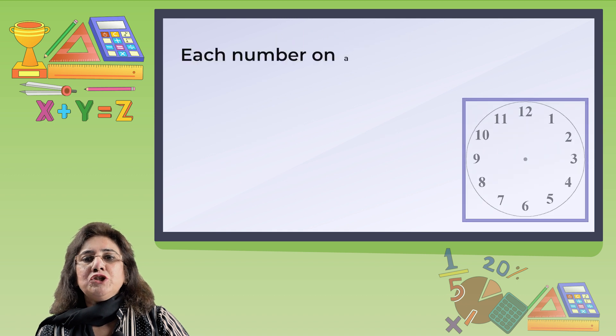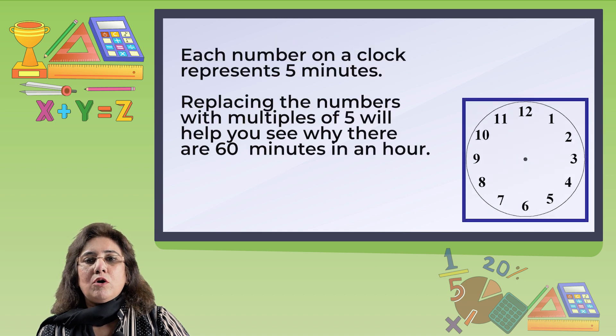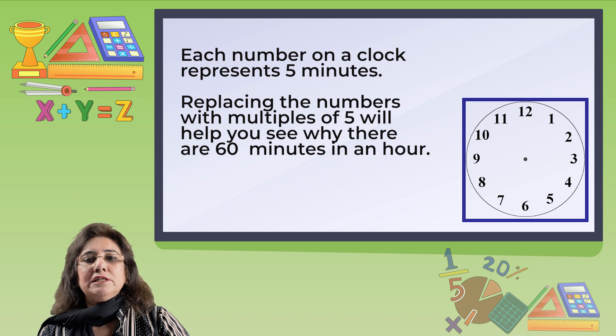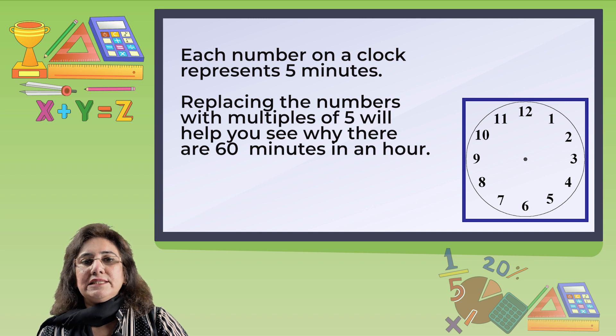Each number on a clock represents five minutes. Replacing the numbers with multiples of five will help you see why there are 60 minutes in an hour.